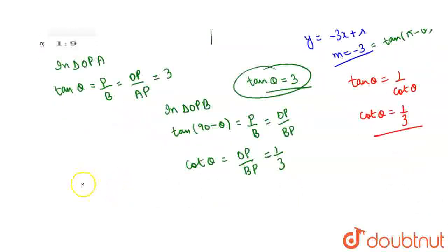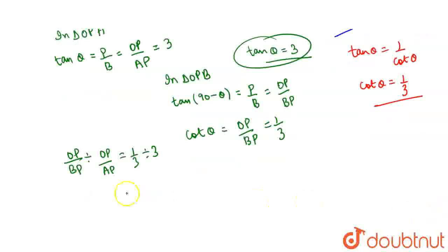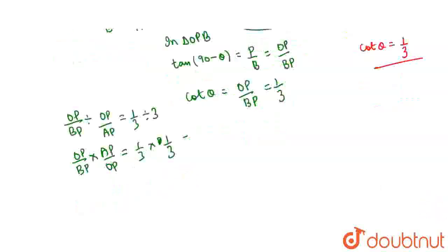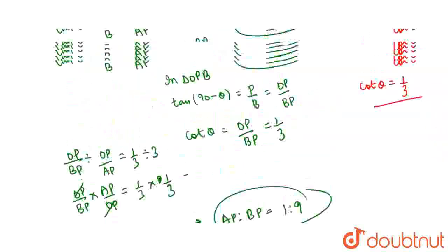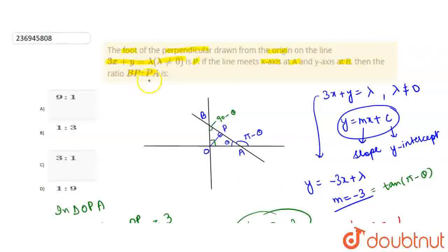अब हम (OP/BP) को (OP/AP) से divide करते हैं: (OP/BP) ÷ (OP/AP) = (1/3) ÷ 3 = (1/3) × (1/3) = 1/9। OP से OP cancel हो जाता है, तो AP/BP = 1/9, यानि AP : BP = 1 : 9। लेकिन हमें question में पूछा था BP : AP, तो वो 9 : 1 हो गई। तो हमारा option A correct हो गया।